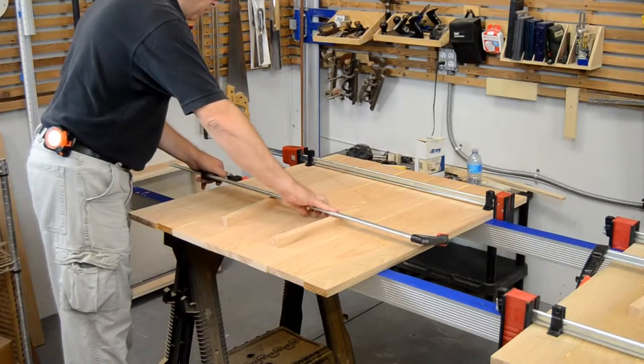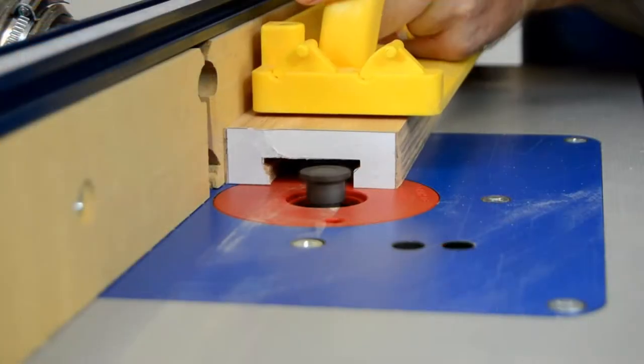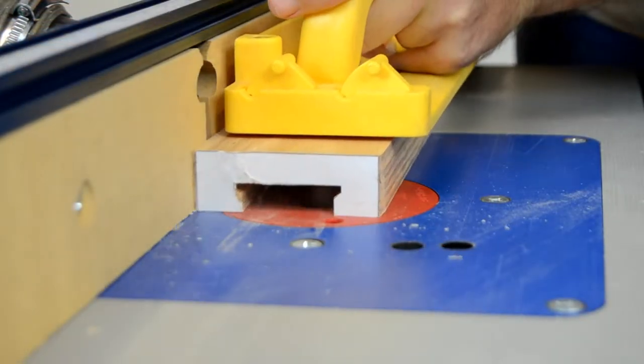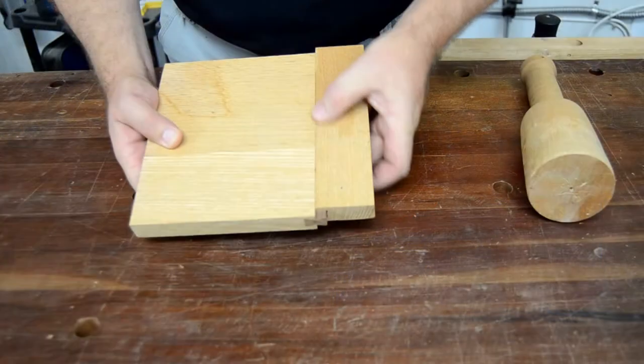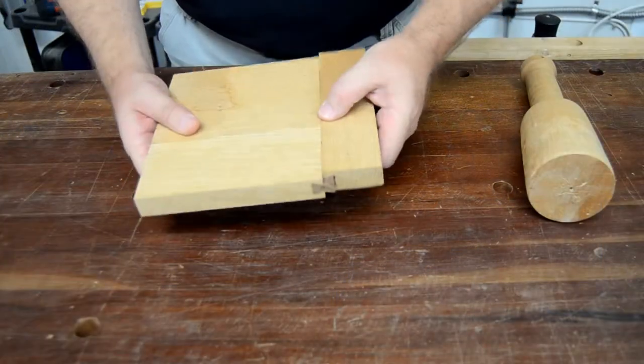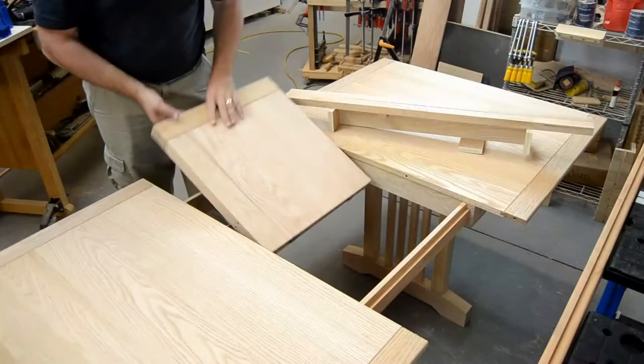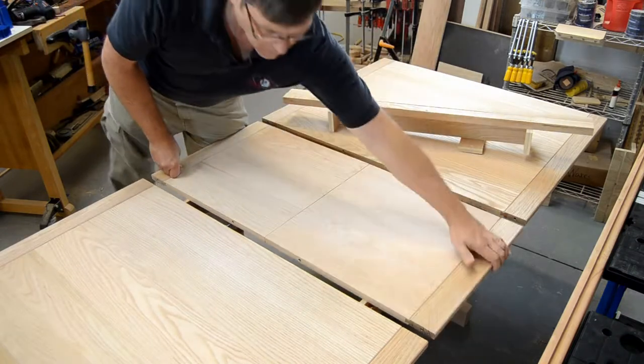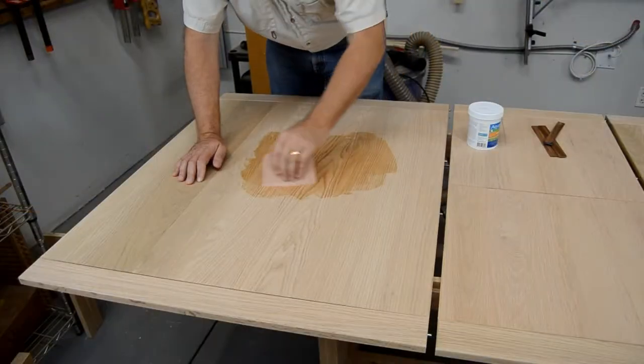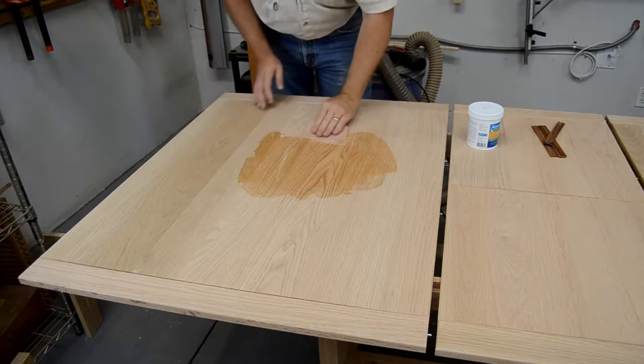In Episode 8, we'll glue up the top sections, complete the apron slides for the top, attach breadboard edges using a dovetail spline, build and install the folding leaf mechanism, and use a grain filler to get an exceptionally smooth finish.